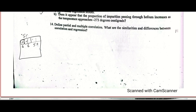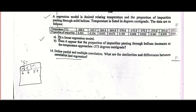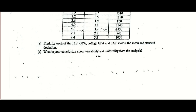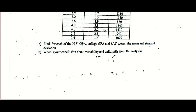They can ask simple correlation, partial correlation, multiple correlation, and definitions of partial correlation — just theory questions for 5 marks. And they might ask regression: simple regression, multiple regression. All these include 10 marks. Then the last question can literally be from anywhere, and normally it will be mean, standard deviation, consistency measurements — whether the data is consistent or not.